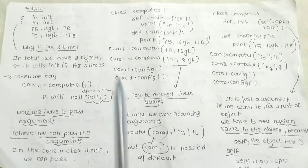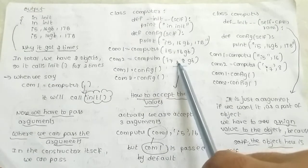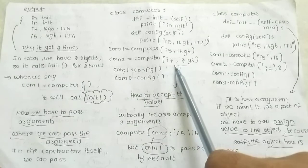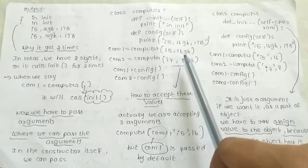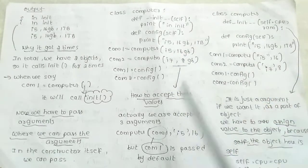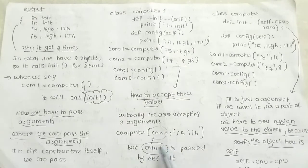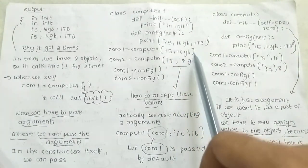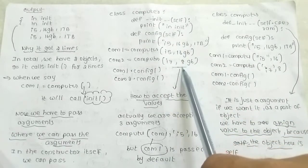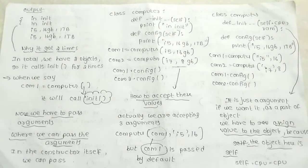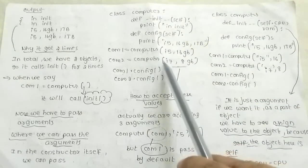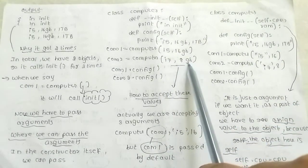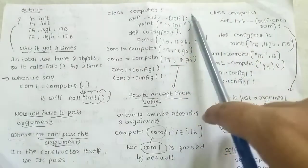How do you accept these arguments? When I run the code, I will get an error. We will choose two arguments here, but by default the object itself is an argument. Behind the scenes, the computer component is the object. So comp1 is self. I accept self, self.cpu, and self.ram — CPU is the first argument and RAM is the second argument.